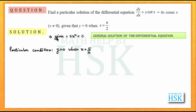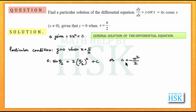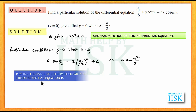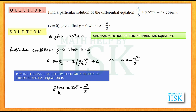For that, we take the general solution and apply the particular condition that y is equal to 0 when x is equal to pi by 2. Placing y equal to 0 and x equal to pi by 2, I get 0 into sin pi by 2 is equal to 2 into pi by 2 whole square plus c, or c is equal to minus pi square upon 2. So placing the value of c, the final answer is y sin x is equal to 2x square minus pi square upon 2.